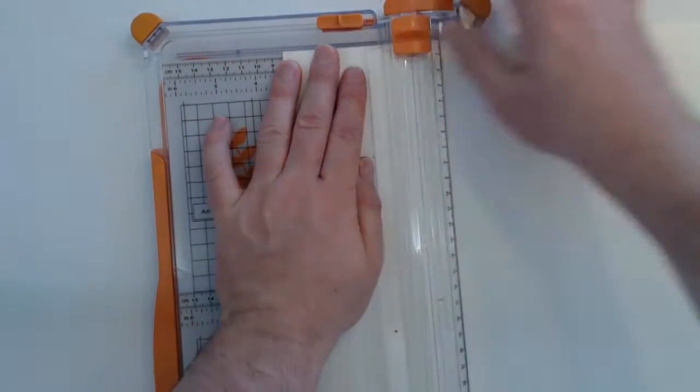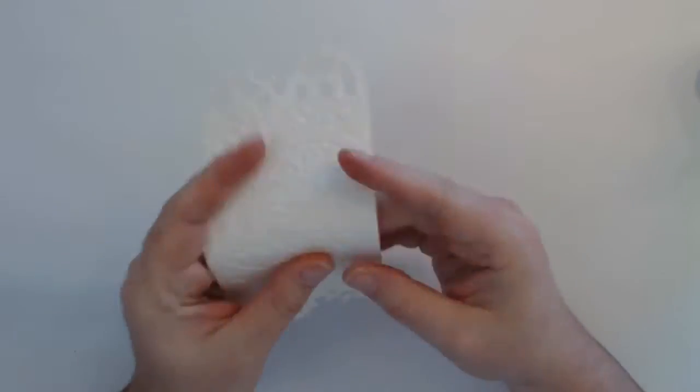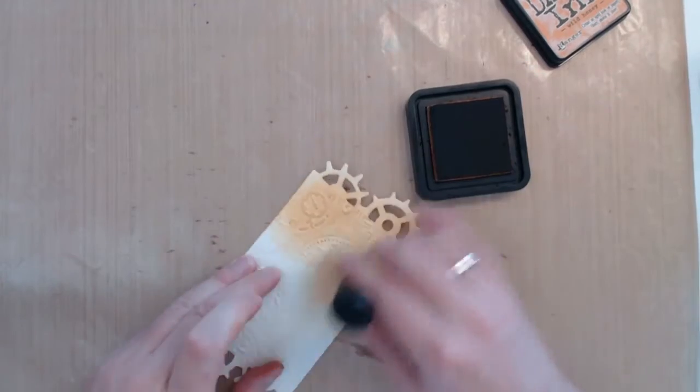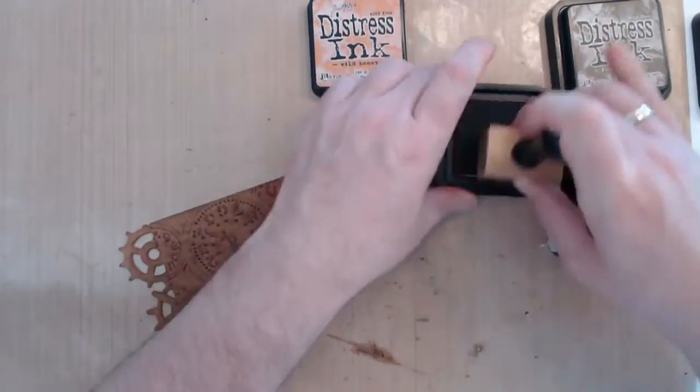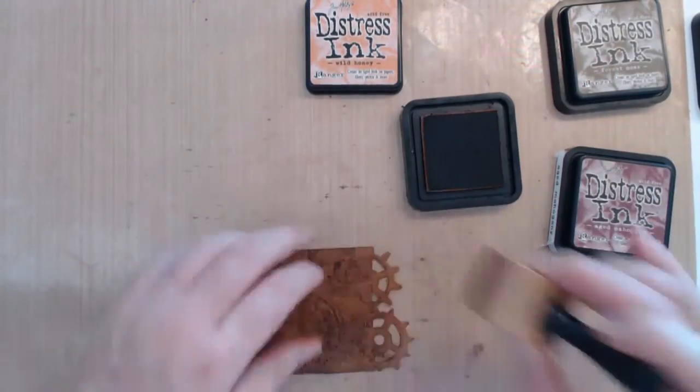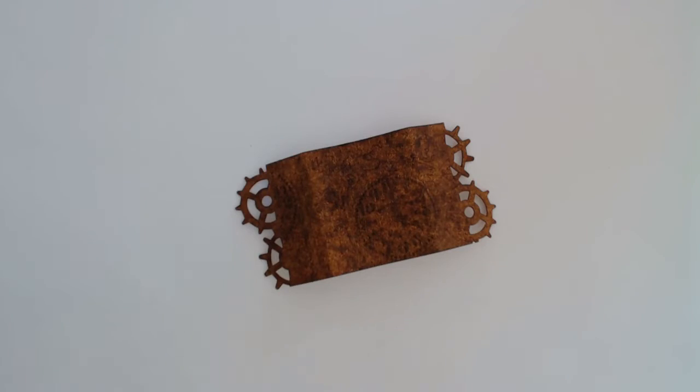But it can be easily cut, wonderfully embossed and die-cut and likewise any other paper, colored with any kind of ink or paint. So actually you can do anything with it that you would usually do with paper. But it is extremely robust and absolutely ideal as the cover of our spine.